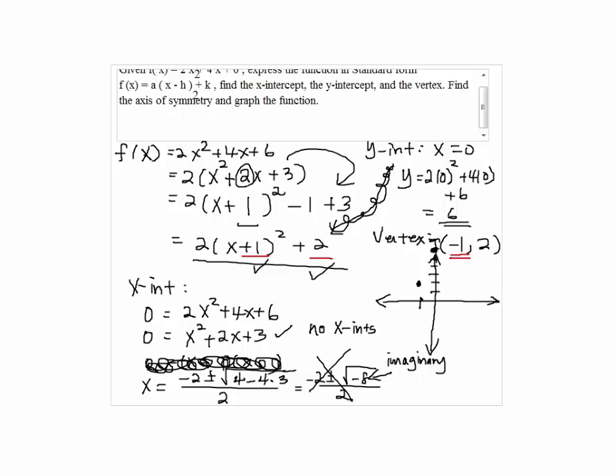The axis of symmetry will be just the x-coordinate of the vertex. So x = -1 will be the axis of symmetry.